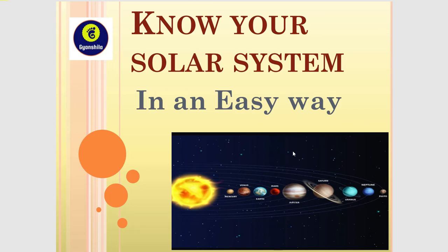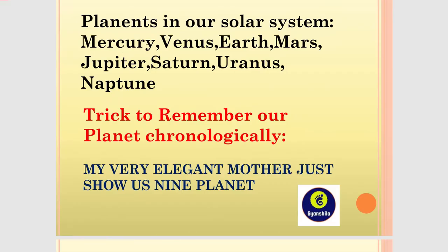We have to select a satellite view of our solar system. We have to know how the solar system is and how it is growing. The planets are called Mercury, Venus, Earth, Mars, Jupiter, Saturn, Uranus, Neptune. This is the trick in chronology — a mnemonic which is 'My Very Elegant Mother' — that is the nine planets.